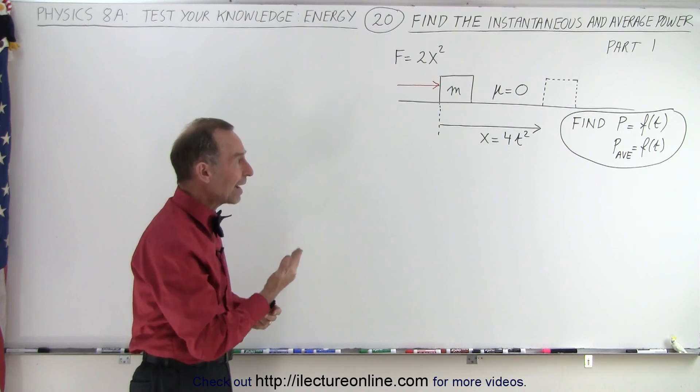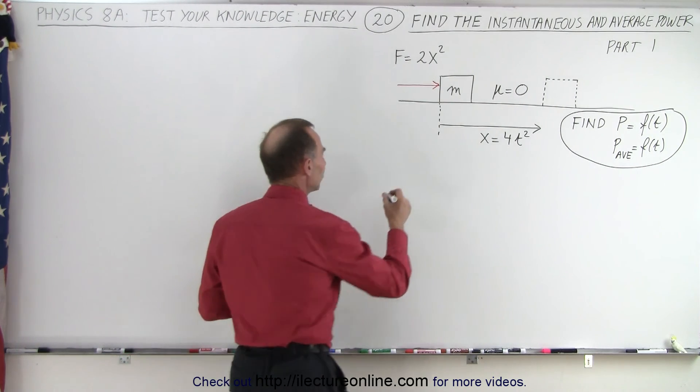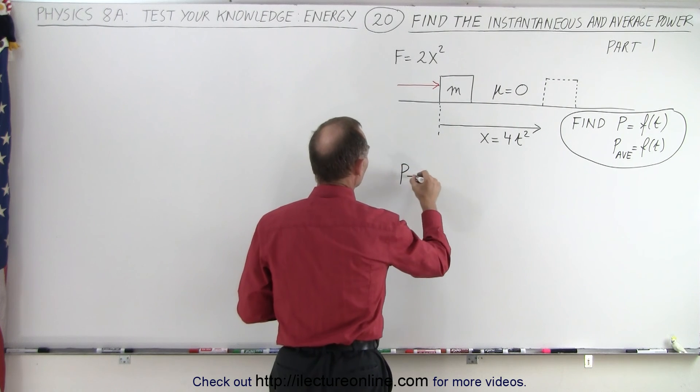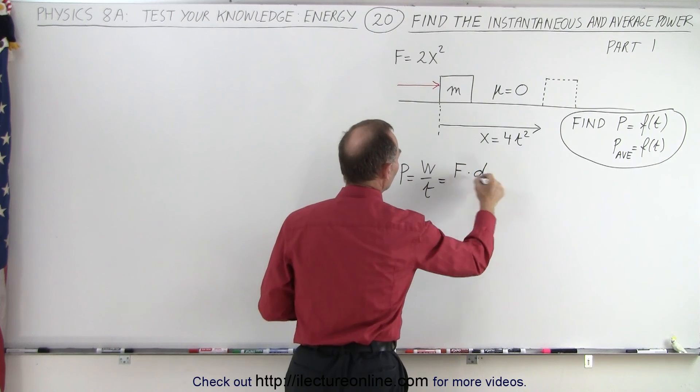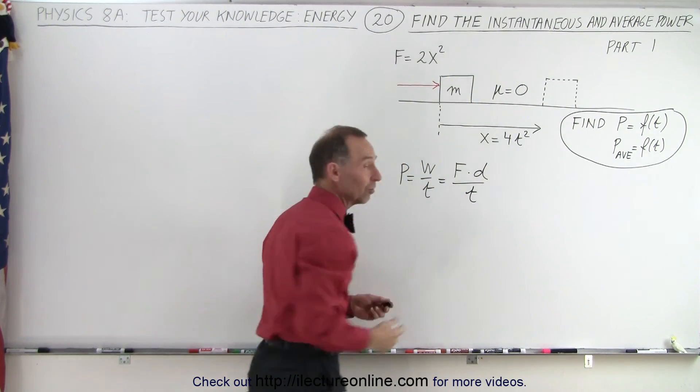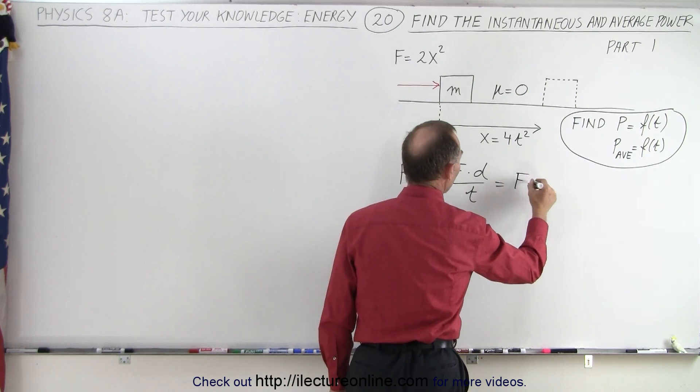So first of all, how do we find the instantaneous power? Well, it turns out that by definition, we can say that power is equal to work divided by time and work is equal to force times distance over time. And since distance divided by time is equal to velocity, this can be written as force times velocity.